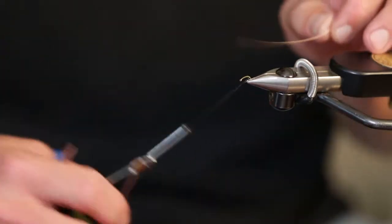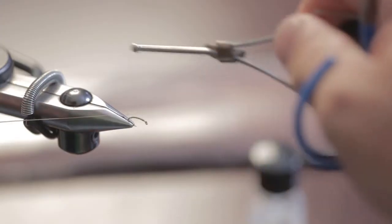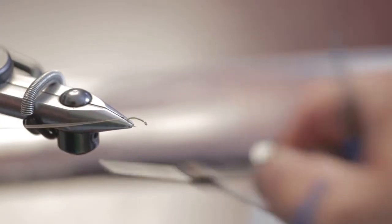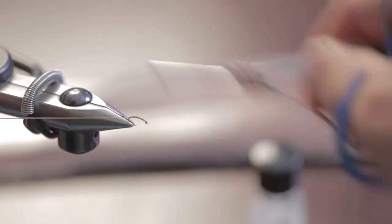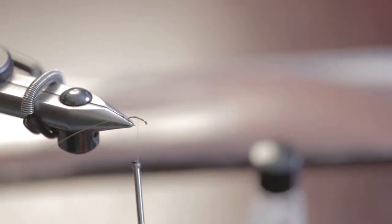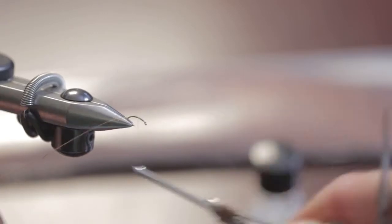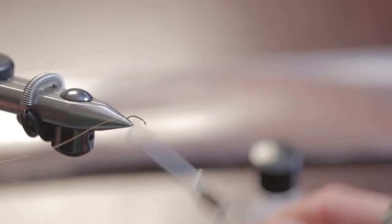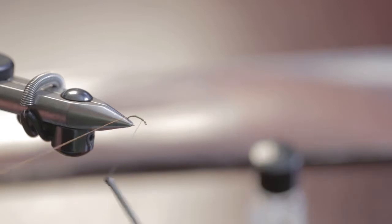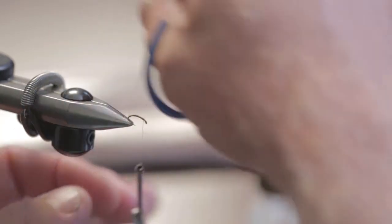We're going to take that quill and tie it in at the bend of the hook. Make sure you've got it secure. We're taking that fine tapered end of the quill and tying it in at the bend of the hook. We're going to work our thread back to the eye of the hook, and now we're going to take our quill and make a nice segmented body with the quill back up over the olive thread.